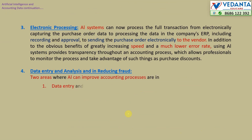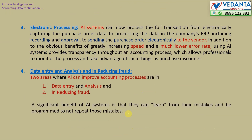In case of electronic processing — that is, after the introduction of AI systems — AI systems can now process the full transaction, from electronically capturing the purchase order data to processing it in the company's ERP system, including recording approval and sending the purchase order electronically to the vendor. In addition to greatly increasing speed and achieving a much lower error rate, using AI systems provides transparency throughout the accounting process, allowing professionals to monitor the process and take advantage of things like purchase discounts.